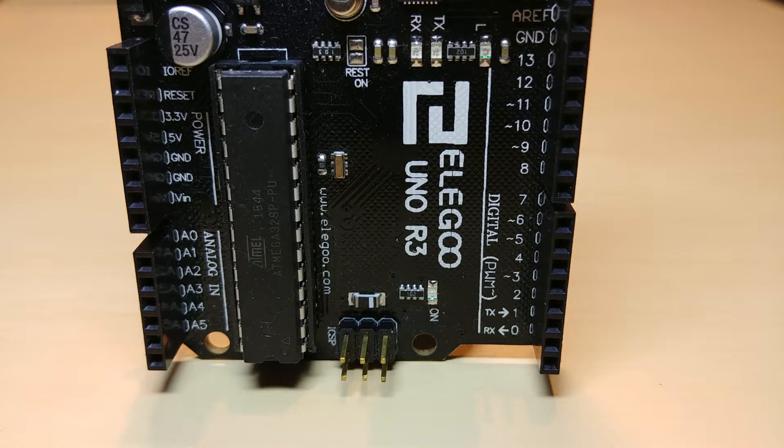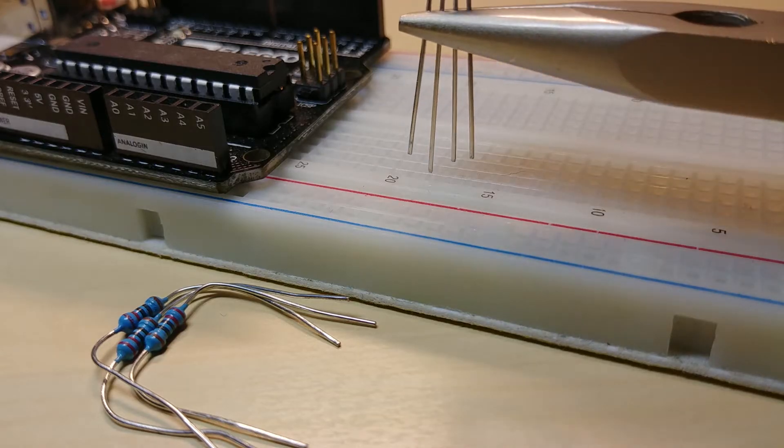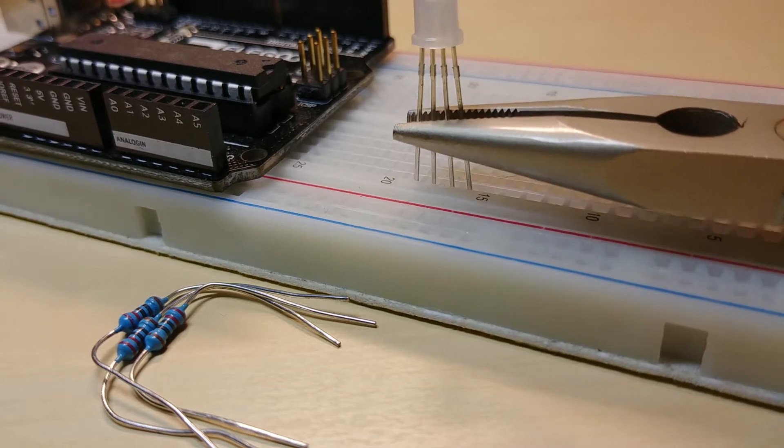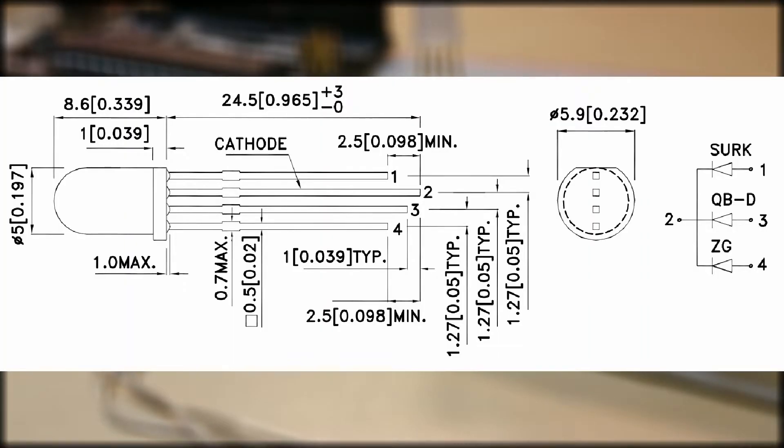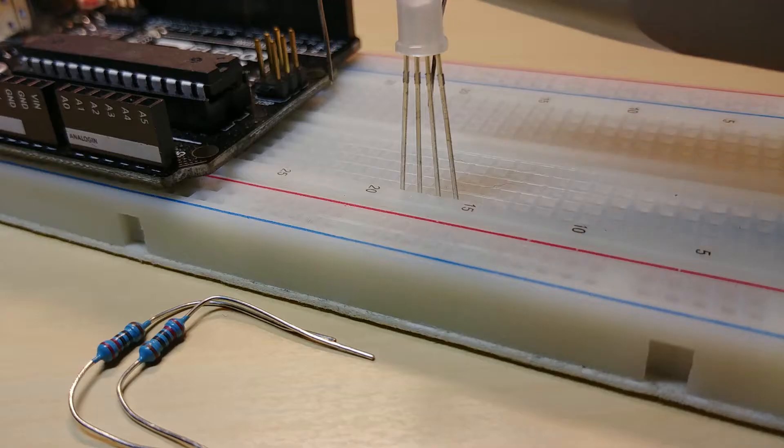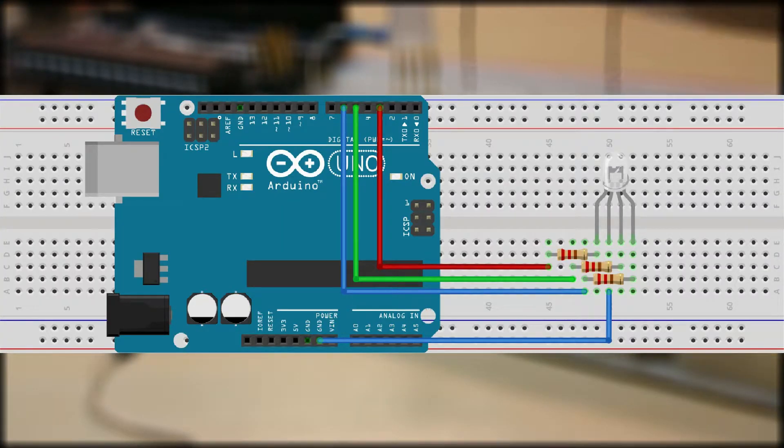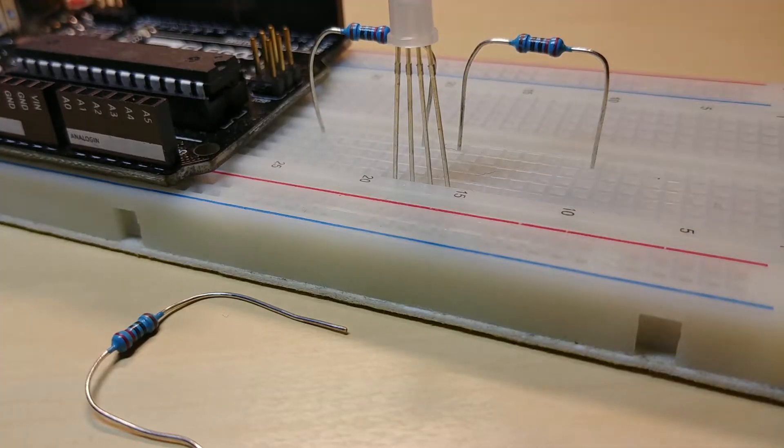Let's connect the circuit. As seen in the schematic the common negative pin is the second also the longest so connect it to ground. The first is the red pin, the third is the green and the fourth is the blue. Connect all of them to a digital pin which supports PWM in series with a 220 ohms resistor and we are done. Let's move on to the code.